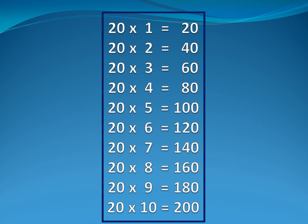Now twenty table. Twenty one is twenty. Twenty two is forty. Twenty three is sixty. Twenty four is eighty. Twenty five is one hundred. Twenty six is one hundred and twenty. Twenty seven is one hundred and forty-two. Twenty eight is one hundred and sixty.